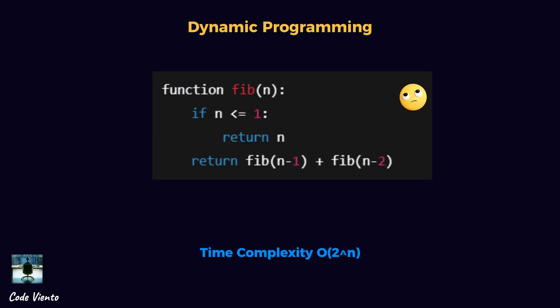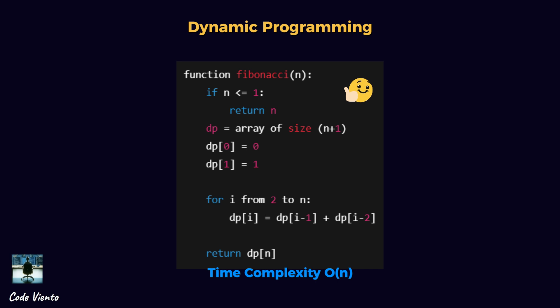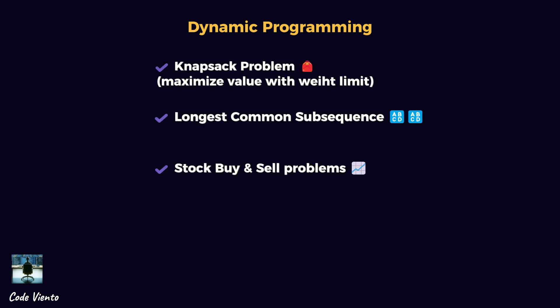Example: Fibonacci sequence without repeating work. Instead of recalculating Fibonacci(n-1) and Fibonacci(n-2) repeatedly, store results in an array. Base case: Fibonacci(0) = 0 and Fibonacci(1) = 1. The formula: Fibonacci(n) = Fibonacci(n-1) + Fibonacci(n-2). Dynamic programming is used in real-life for the knapsack problem (maximize value with weight limit), longest common subsequence, and stock buy and sell problems.